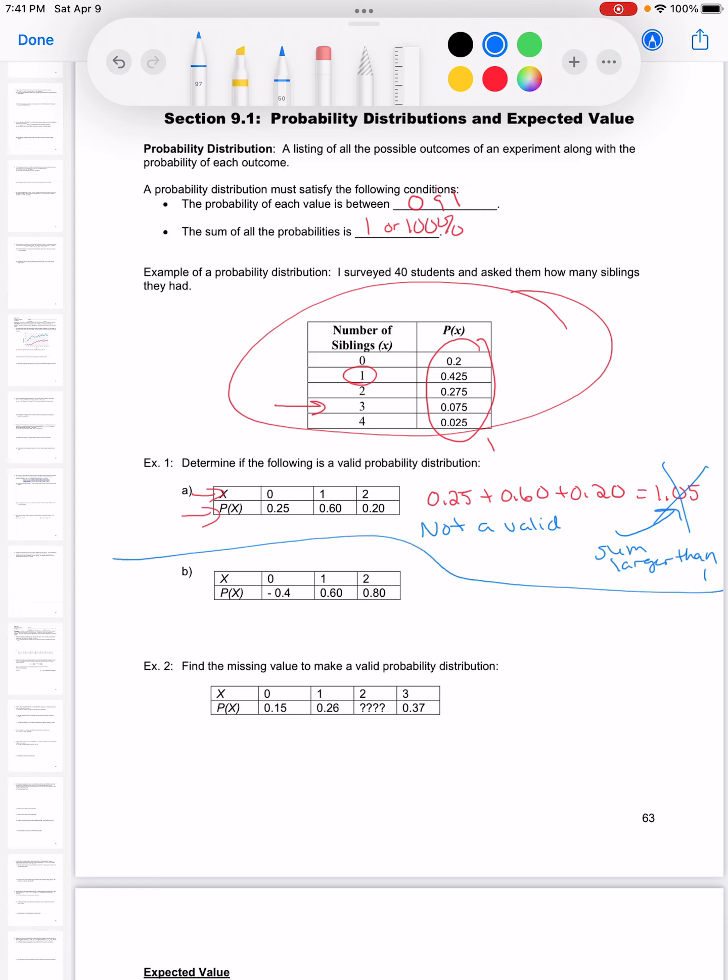For part B down here, if I look at this one, I don't even have to add them up. Right away, I see a probability that doesn't work. Every probability has to be between 0 and 1.